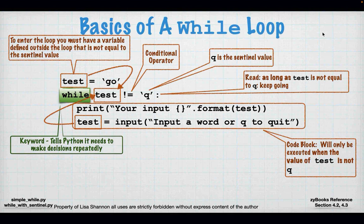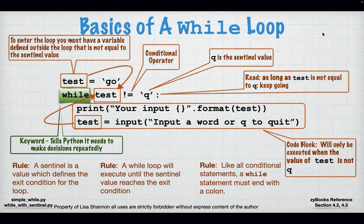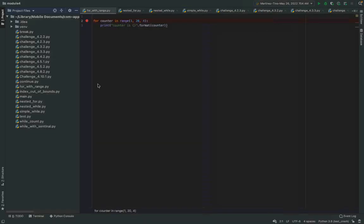If you're thinking about your game, this is what's going to happen — you'll be able to say enter Q to quit, take in Q, and test it against your variable inside the loop. A sentinel value defines the exit condition of a loop. A while loop will execute until the sentinel value reaches the exit condition — it's very easy to set up a while loop that runs forever, and if you do that in Zybooks, it'll give you an error. Like all conditional statements, a while statement must end with a colon.